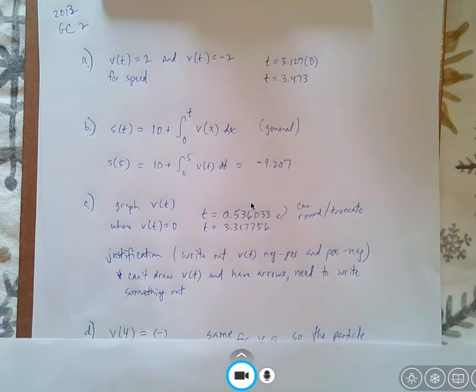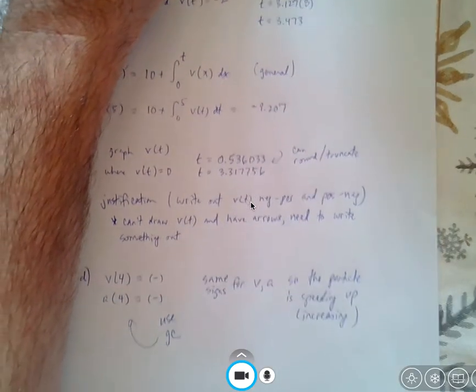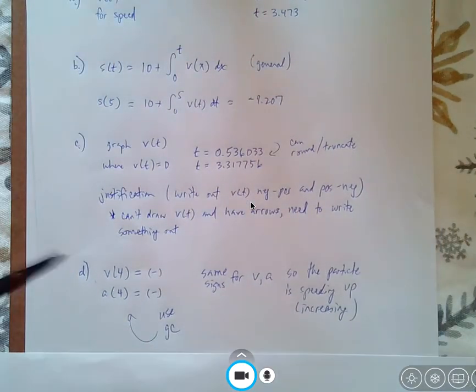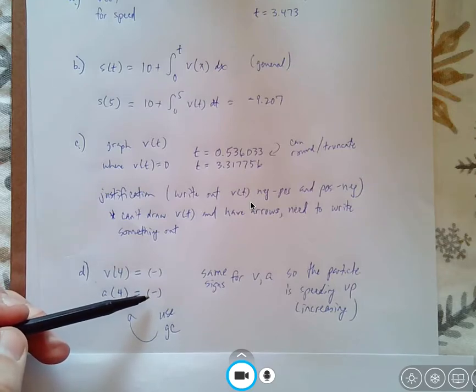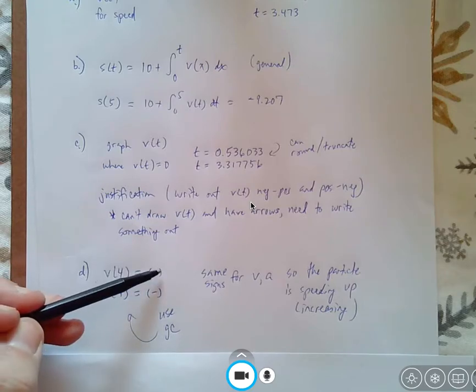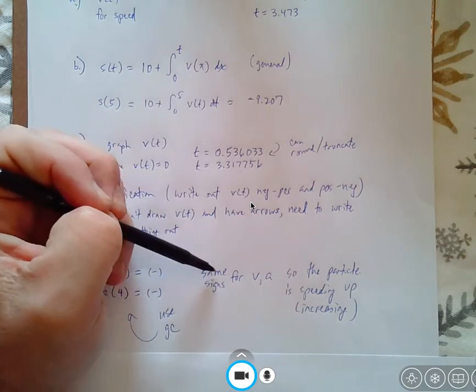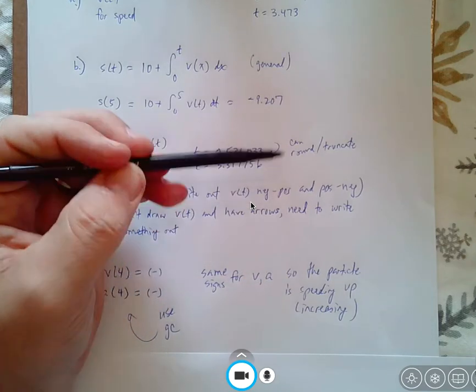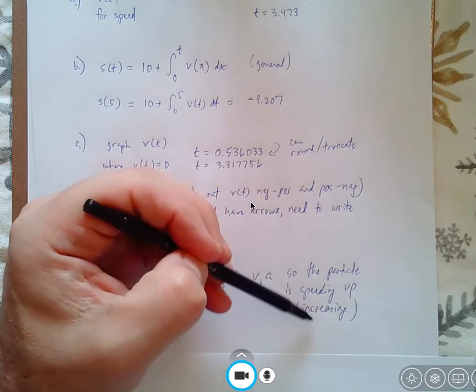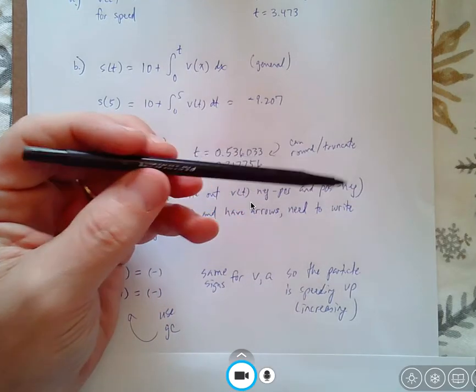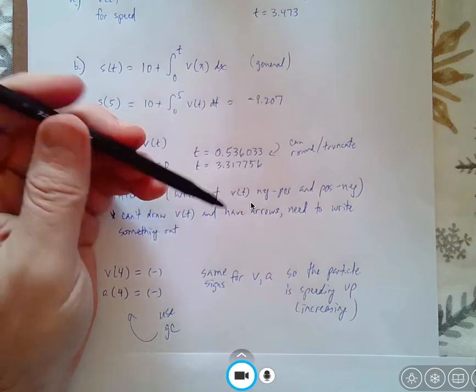And question D, we've spent a lot of time on. At time 4, I know that the velocity is negative, I can use my calculator, and at time 4, the acceleration is also negative. And you can even write what it is, it's with numerical values, but the sign is the key. Same signs for velocity and acceleration imply that the particle is speeding up. The AP likes to use the word increasing, but they would accept speeding up. So just keep that in mind. I thought this was a pretty straightforward question.